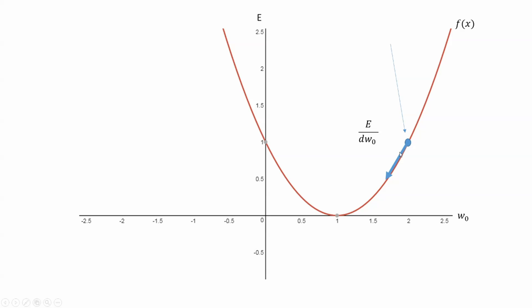The learning rate determines how far downwards we go. If the learning rate is way too big, our weight might jump from 2 to maybe minus 2 — that's not what we want and might actually increase our error. So we want a small learning rate like 0.5 or 0.3, going downwards in small steps. When we apply the backpropagation algorithm we will not do it in only one step — we might need a thousand steps to get our output closer and closer to our target output.